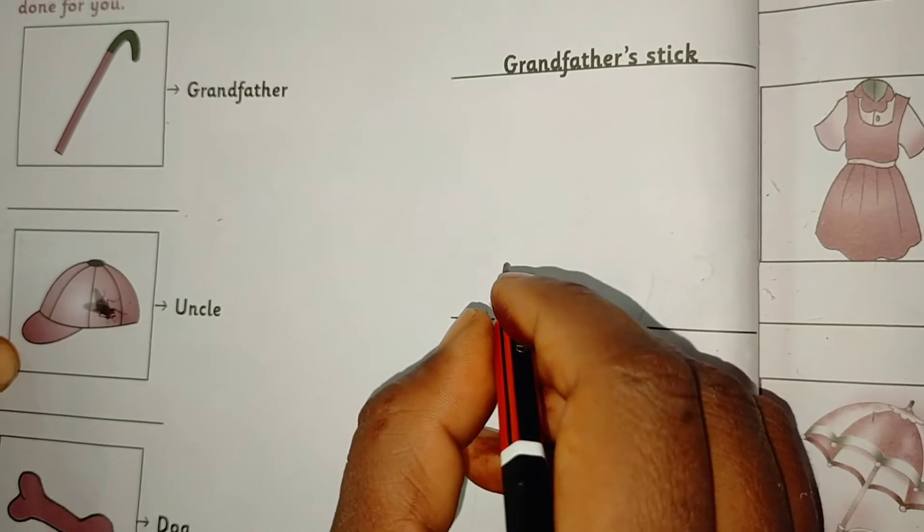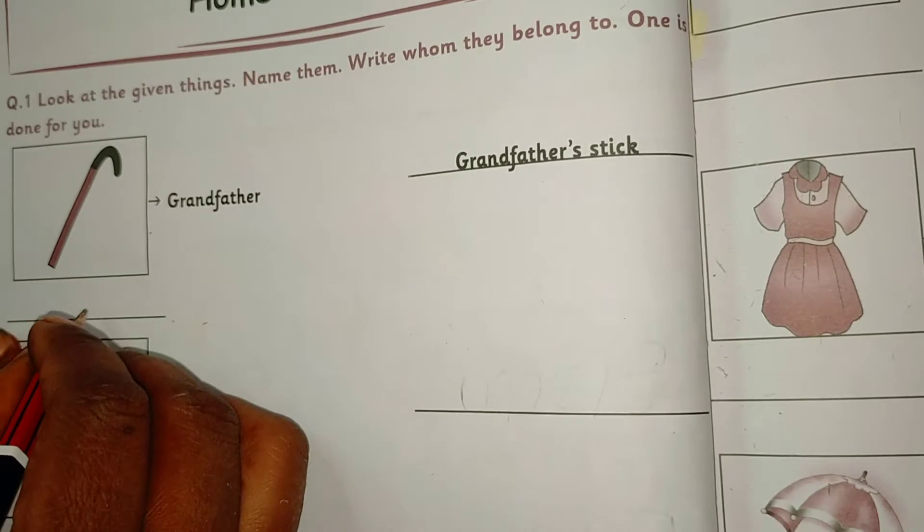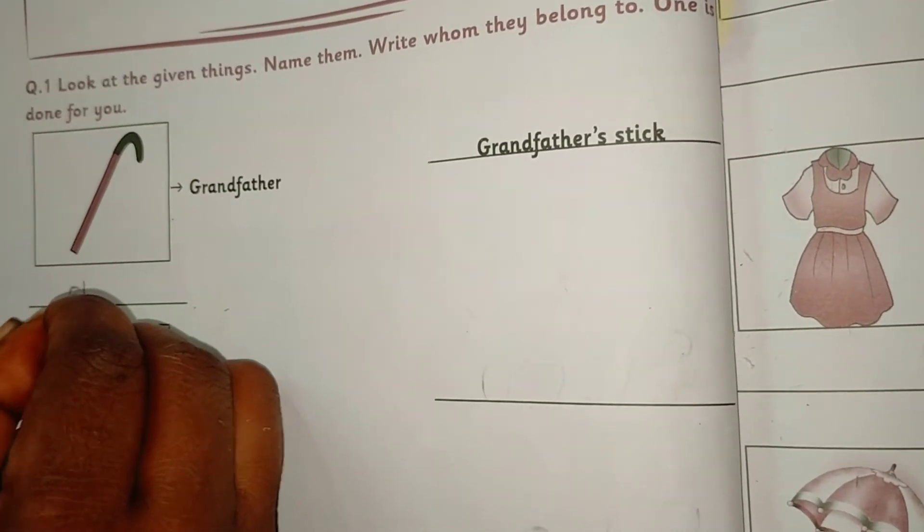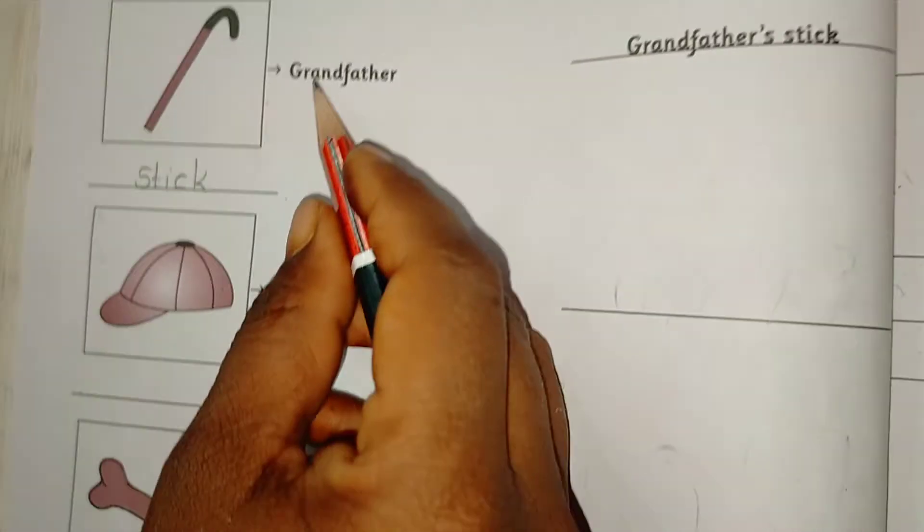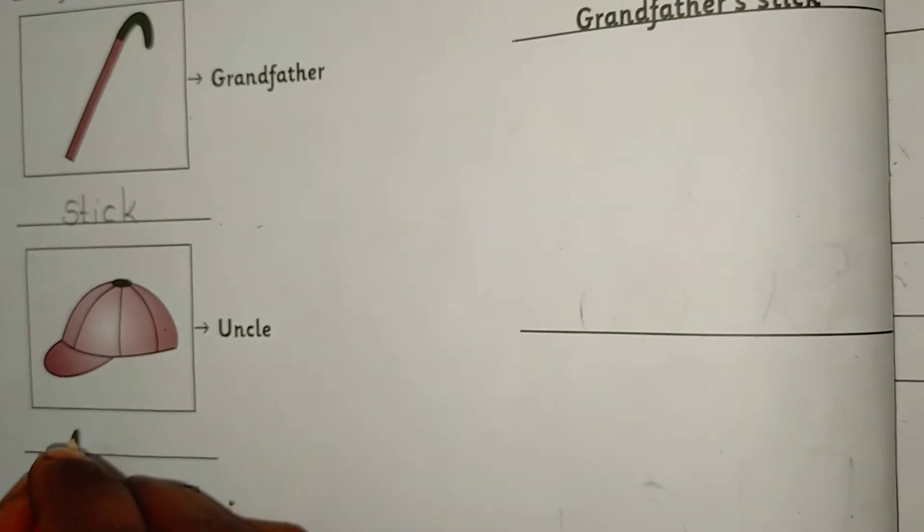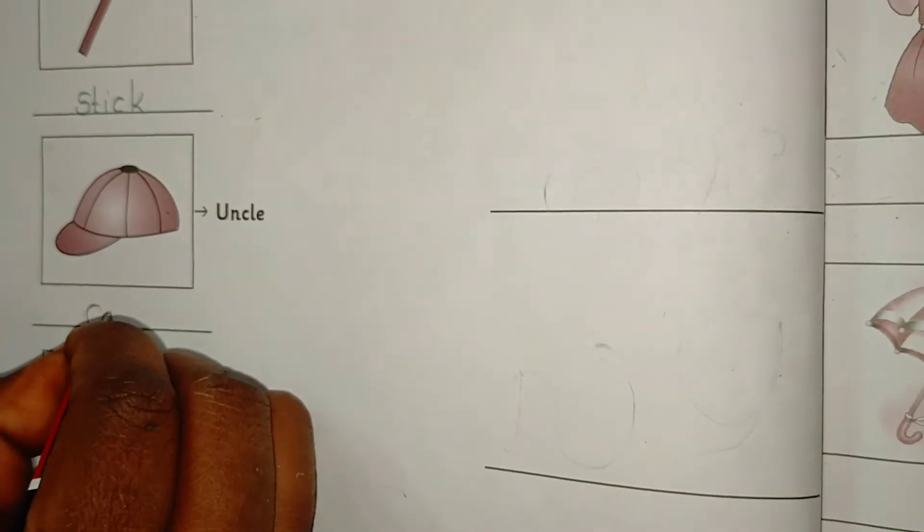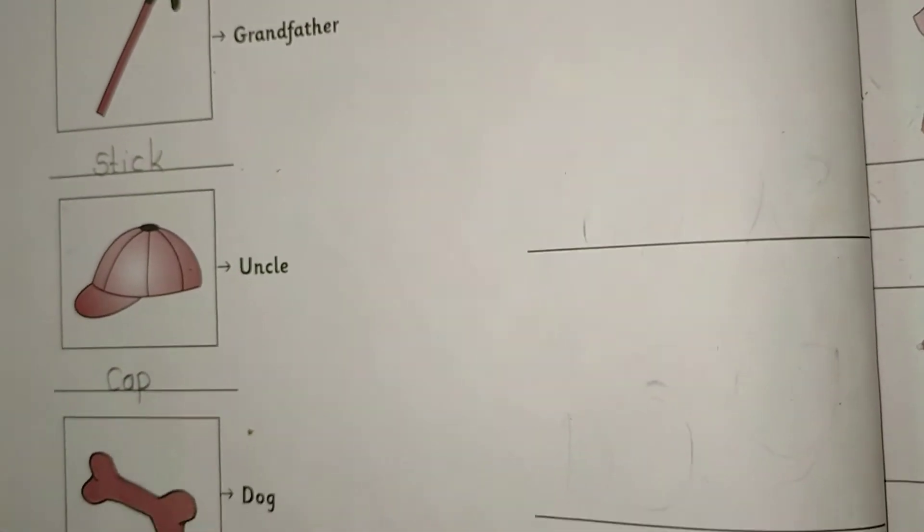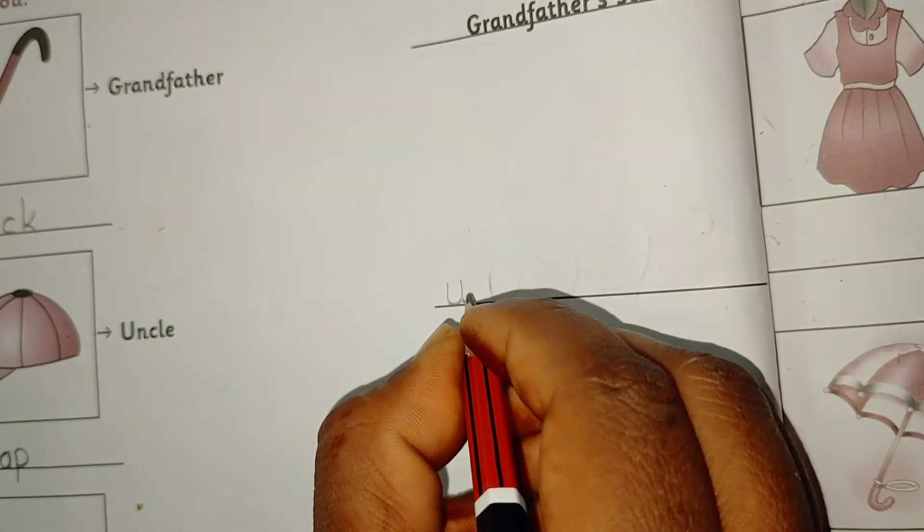What is this? This is a cap. Uncle's cap. So now we will write here: S-T-I-C-K, stick. Grandfather's stick. What is this? This is a cap. We will write here with spelling: C-A-P, cap.